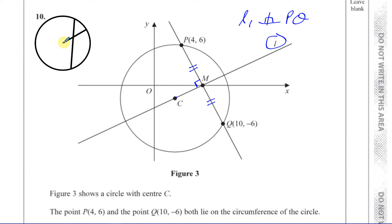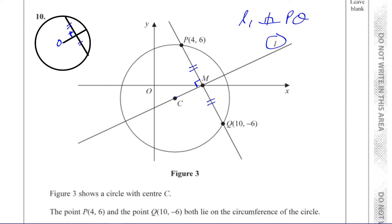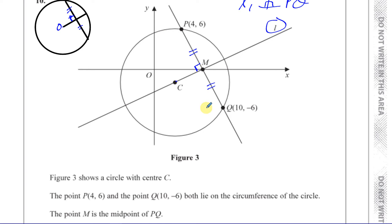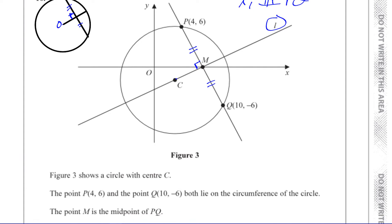This is a key property of circles: when a radius cuts a chord into two equal halves, it cuts it at right angles. The converse also holds — if a radius cuts a chord at right angles, it has bisected the chord. The question didn't explicitly say L is perpendicular to PQ, but the given information leads us there if we remember this circle theorem from IGCSEs.